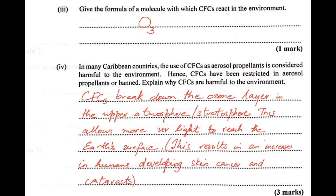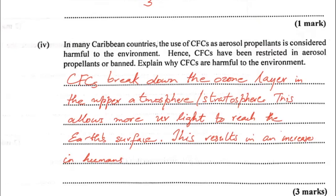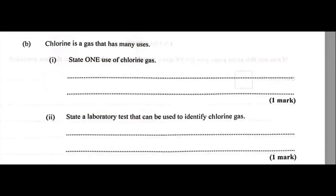Since humans are part of the environment, the ozone layer is there to protect us from the harmful UV rays coming from the Sun. CFCs break down the ozone layer in the upper atmosphere — the stratosphere — and this allows more UV light to reach the Earth's surface, depleting our shield from UV radiation. Now over to part B of number six.